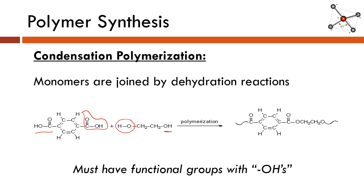That wraps it up for today. Make sure you're comfortable with the terms monomer and polymer, and understand how polymers are represented — put brackets or parentheses around the repeating unit and then put a little n as a subscript outside to communicate that this unit repeats again and again, essentially indefinitely. Natural polymers are much more complicated looking than synthetic polymers, but either way they share the same general characteristic: you take a small unit and repeat it. Make sure you understand how polymers are made and can look at a monomer and determine whether it's better suited for condensation or addition polymerization. Thank you for tuning in, and I hope you found this helpful.